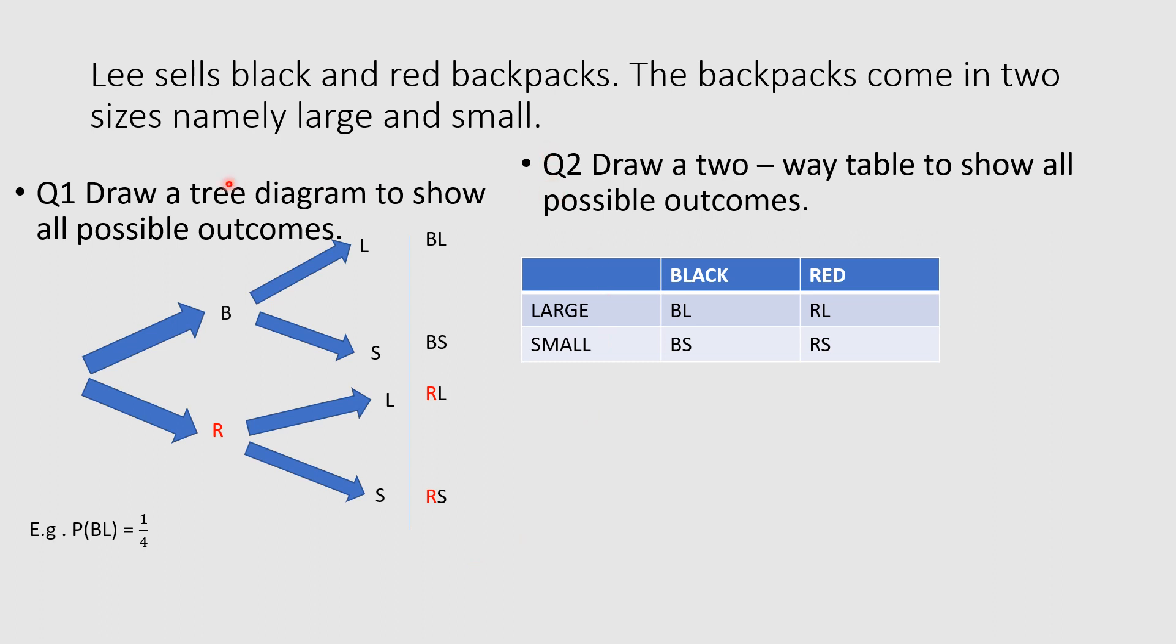Question two, same question, but now draw a two-way table to show all possible outcomes. So my two-way table: I've got black backpack and red. My size is large and small. Now to complete my table, I'm going to say BL and then BS. Then I've got red RL and RS.